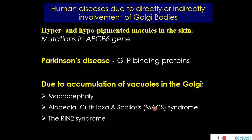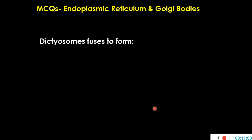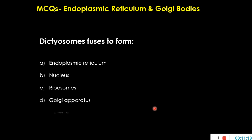Now we move to the important MCQs. The first question: dictyosomes fuse to form what — endoplasmic reticulum, nucleus, ribosomes, Golgi apparatus, or mitochondria? Dictyosomes are vesicle-like structures that combine and fuse together. The right answer is the Golgi apparatus.